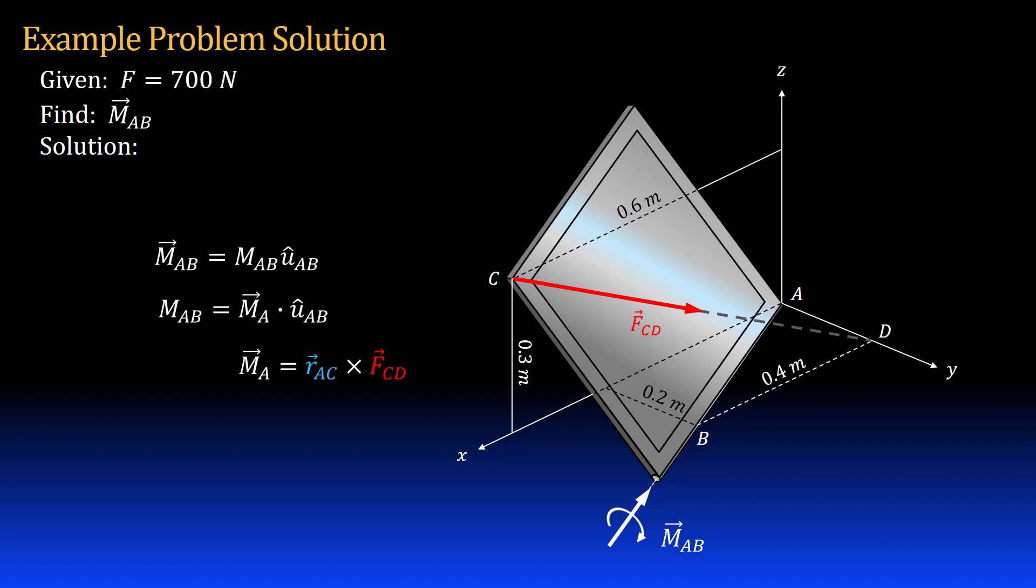We will find the moment vector about point A by crossing a position vector from point A to point C with the force vector.